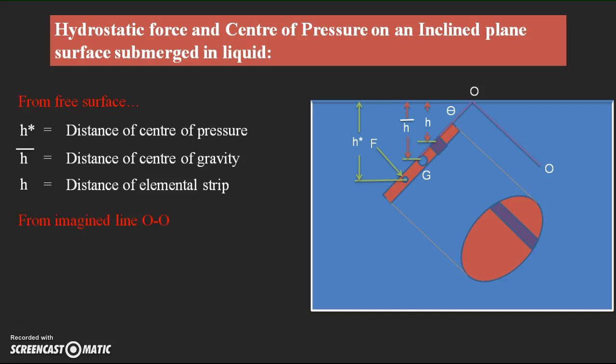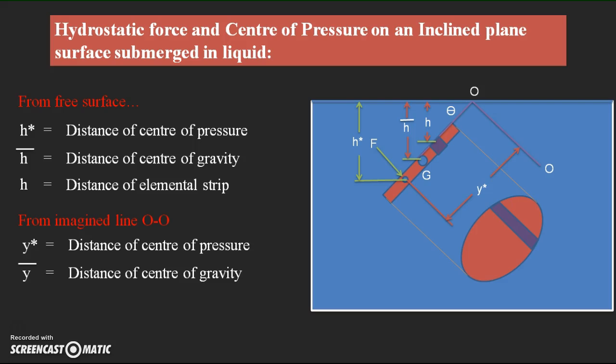With reference to the O-O imaginary line: Y-star is the distance of the center of pressure from O-O, corresponding to H-star measured from the free surface. Y-bar is the distance of the center of gravity from O-O, and Y is the distance of the elemental strip from the O-O reference line.